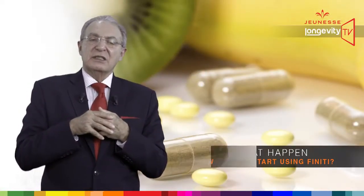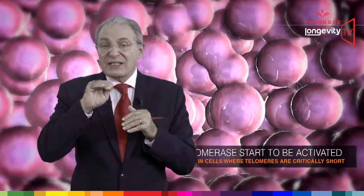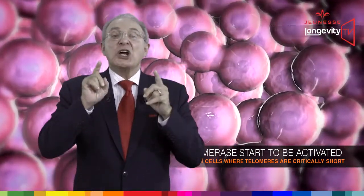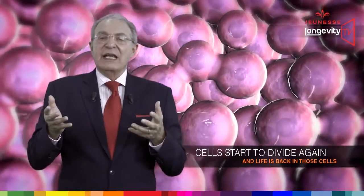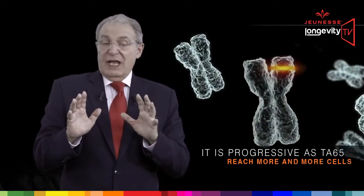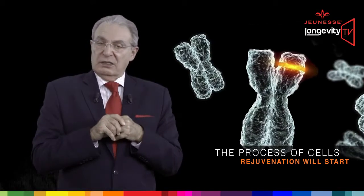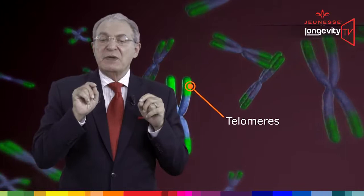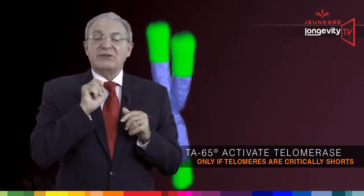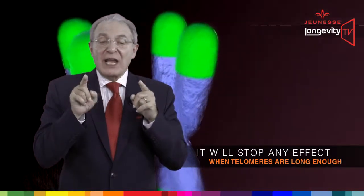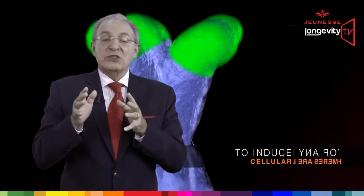So what happens when we start using Finiti? After taking Finiti, telomerase starts to be activated in cells where telomeres are critically short. At the moment when telomeres are longer than 5,000 base pairs, cells start to divide again and life is restored in those cells. It is progressive — as TA-65 reaches more and more cells, and if you take it on a regular basis, the process of cell rejuvenation will start. The good news is that TA-65 has a so-called transient effect, which means it will activate telomerase only if telomeres are critically short, and will stop any effect when telomeres are long enough to induce cellular division.